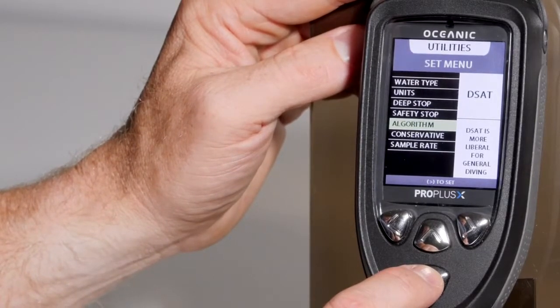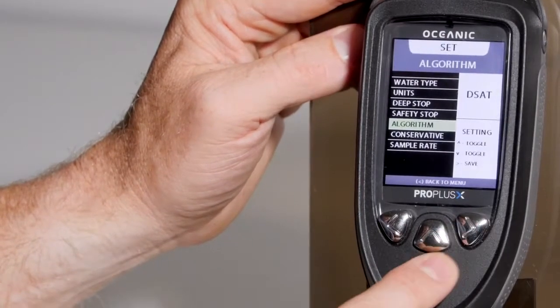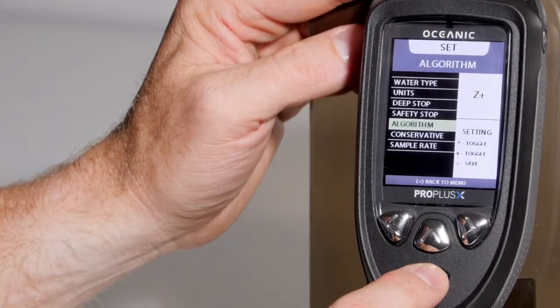You have the choice between the D-STAT algorithm, which is based off of modified Haldanian, or the Z-plus, which is based off of Buhlman.